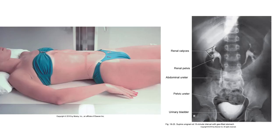For the AP urinary system, perform this view just as you would a KUB. The patient position should be supine with support at the knees to reduce back strain if needed. The MSP should be aligned to the middle of the grid device, move arms out of the field, and center the IR to the level of the iliac crest. Two IRs may be required to demonstrate anatomy on tall patients. The central ray should be perpendicular to the center of the IR at the level of the iliac crest at the MSP.